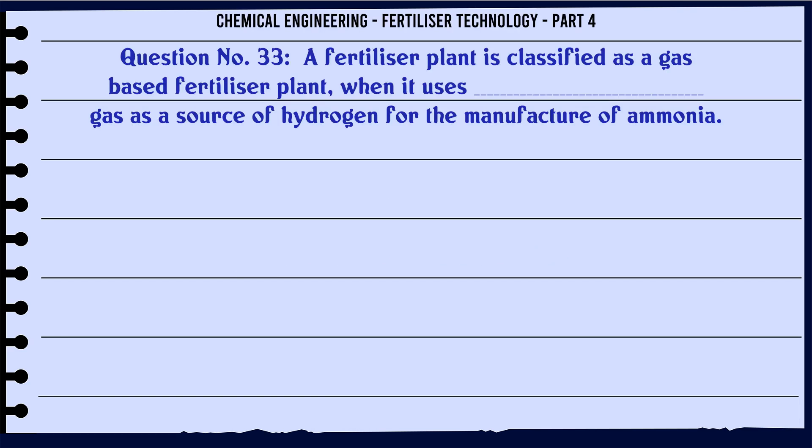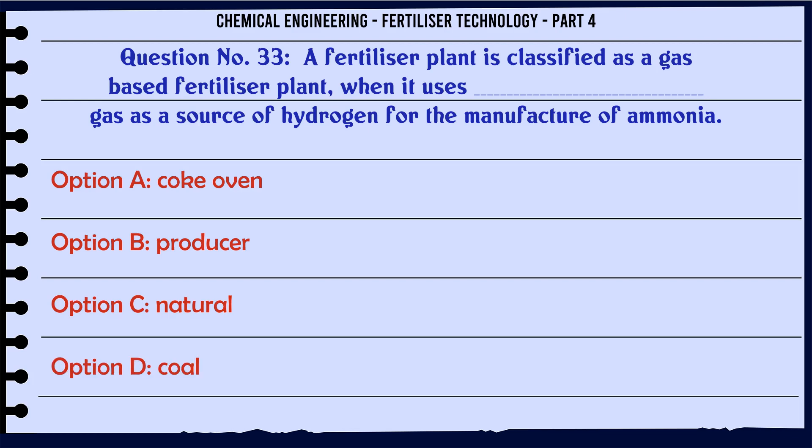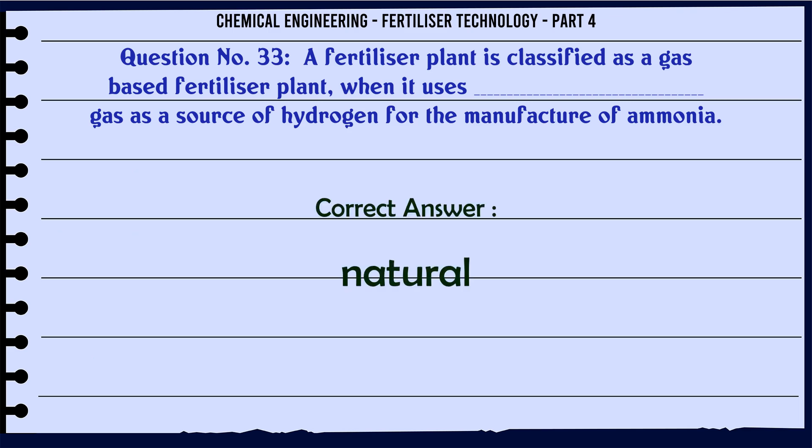A fertilizer plant is classified as a gas-based fertilizer plant when it uses __ gas as a source of hydrogen for the manufacture of ammonia: a. coke oven, b. producer, c. natural, d. coal. The correct answer is: natural.